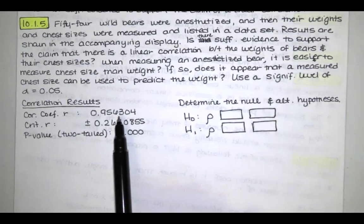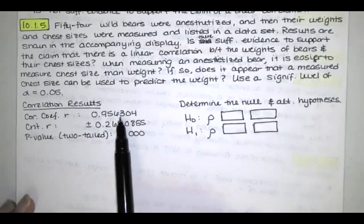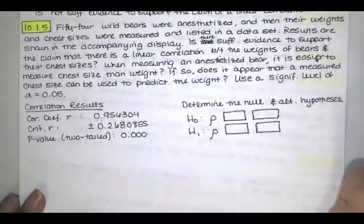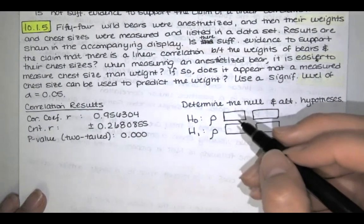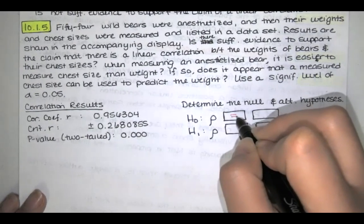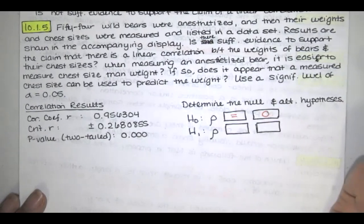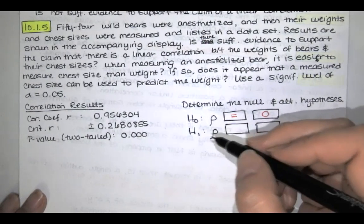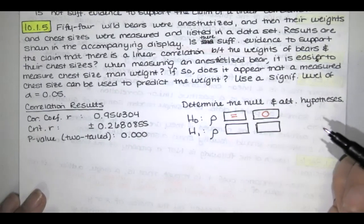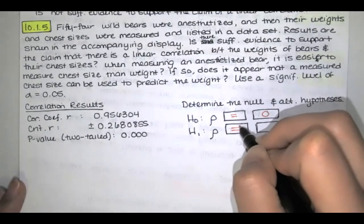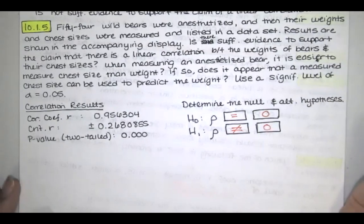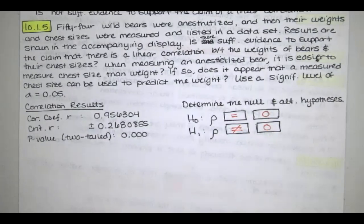R is the linear correlation coefficient for our sample. Now the null hypothesis, whenever we're testing for correlation, is always that that linear correlation coefficient for the population of paired data is equal to 0. So we're saying there's absolutely no correlation. And the alternative hypothesis is that the linear correlation coefficient for the population is non-zero. So that's the first part of this question.